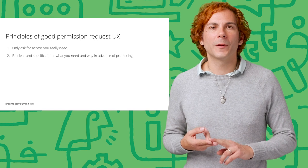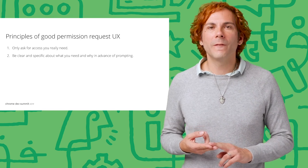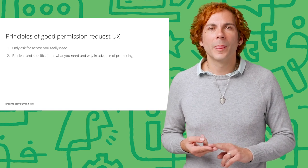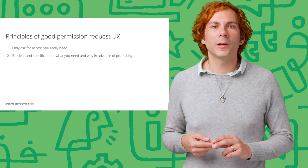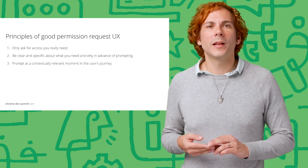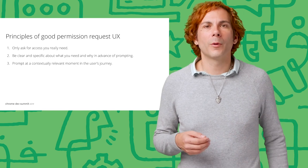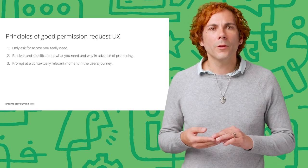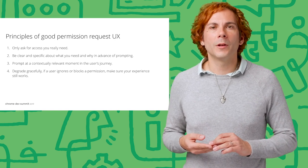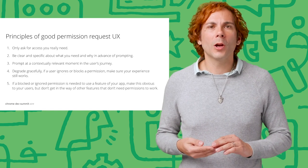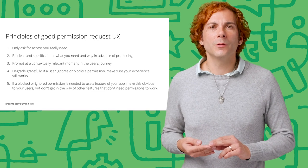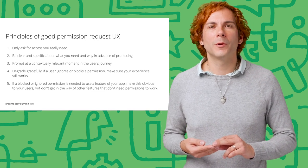Second, be clear and specific about what you need and why, in advance of prompting. Don't assume that your users know what your brand is or what your app does — explain to them clearly, or make sure the usage is fully aligned to the user's gesture. Third, prompt at a contextually relevant moment in the user's journey. Don't ask for permissions up front. Fourth, degrade gracefully: if a user ignores or blocks a permission, make sure your experience still works. Fifth, if a blocked or ignored permission is needed to use a feature of your app, make this obvious to your users, but don't get in the way of other features that don't need that permission to work.